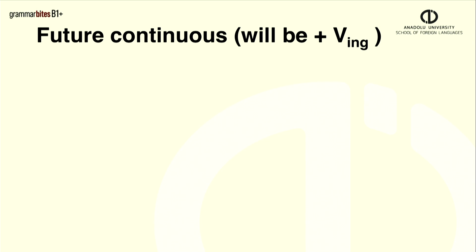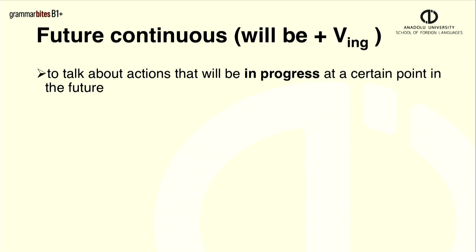Lastly, we have the future continuous. The form is easy. We use will plus be plus verb in the ing form. We use this tense to talk about events or situations that are going to be in progress in the future. Let me give you an example. I'm packing my case now. Next weekend, I'll be relaxing on the beach.